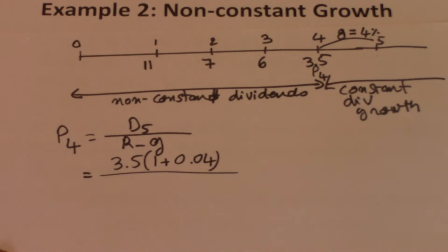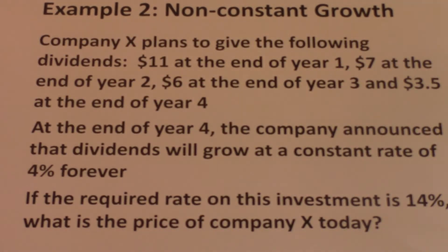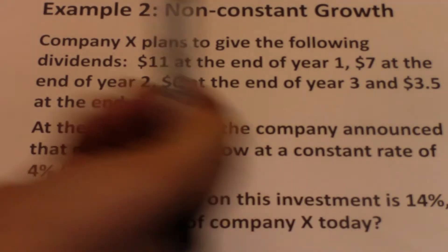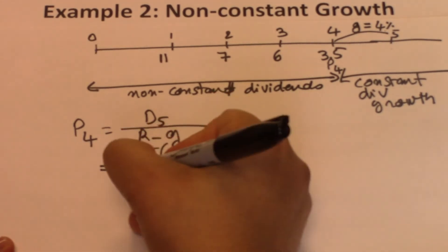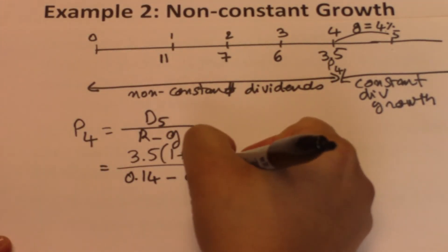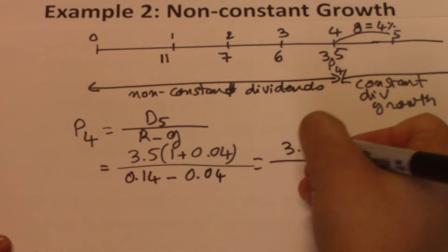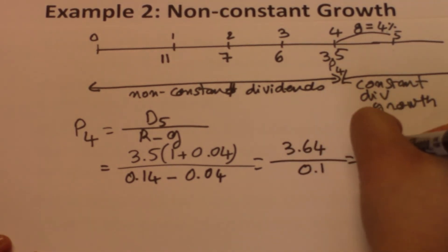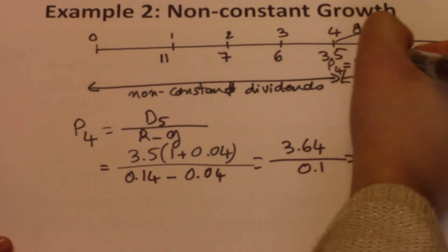We divide by R minus G. R is the required return on this investment, and the problem tells us the required return is 14%. It would be 0.14 minus the growth rate in dividends which is 4% or 0.04. This equals 3.64 divided by 0.1 which gives us a price of 36.4. P4 equals $36.4.